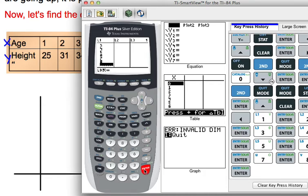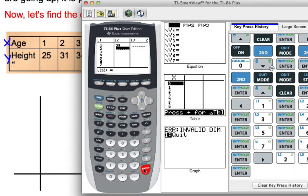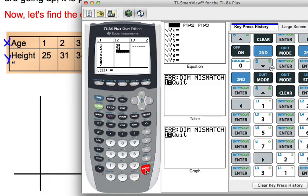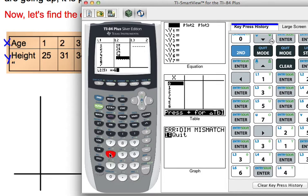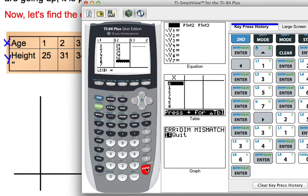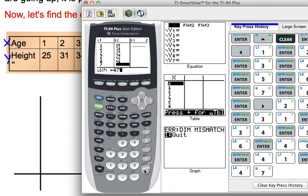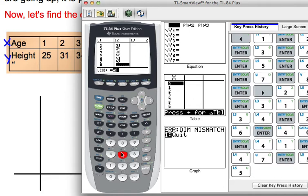I'm going to go to list two, so I'm going to arrow to the right, and that brings me up to the top. Now I'm going to enter in the heights of the children. So when they're one years old, they're 25 pounds, 31 pounds at 2, 34 pounds at 3. We'll continue that: 36, 40. Make sure you push enter after each one.